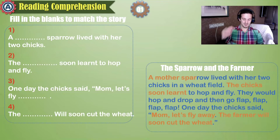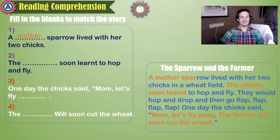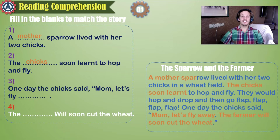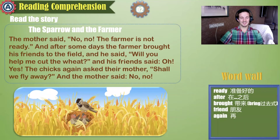Try to fill in the blanks. Use the words in orange below if you need. One: a sparrow lived with her two chicks — a mother sparrow. Two: the birds soon learned to hop and fly — the chicks. One day the chick said, mom, let's fly away. The farmer will soon cut the wheat.